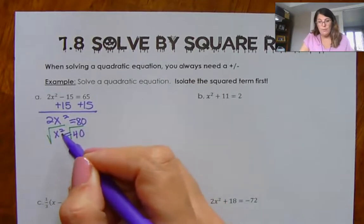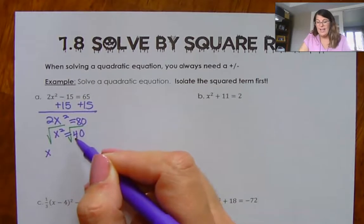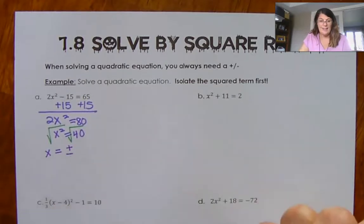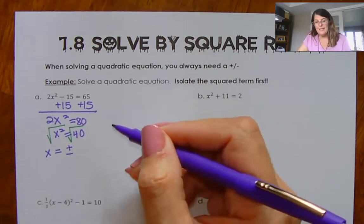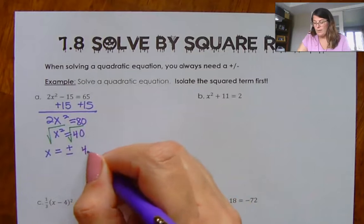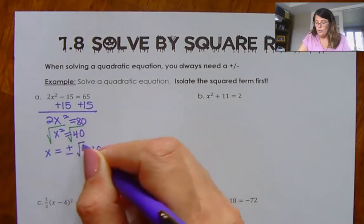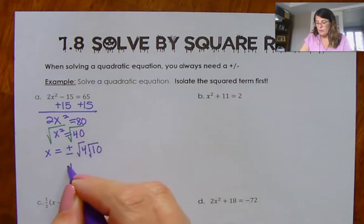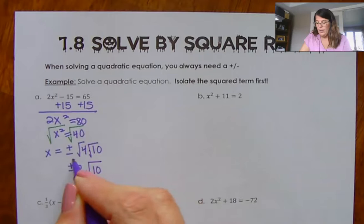The square root of x² is x. The square root of 40 — I have to simplify this. It's going to be a positive or a negative answer. 40 has a perfect square of 4 trapped inside, so that is 4 times 10. I can write that as the square root of 4 times the square root of 10. The square root of 4 is 2, so it's positive or negative 2 square root of 10.